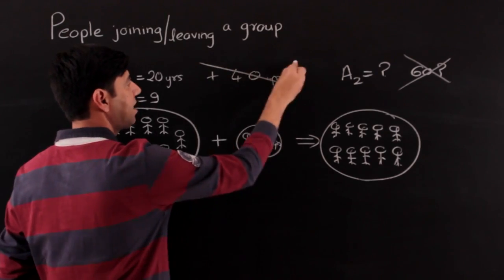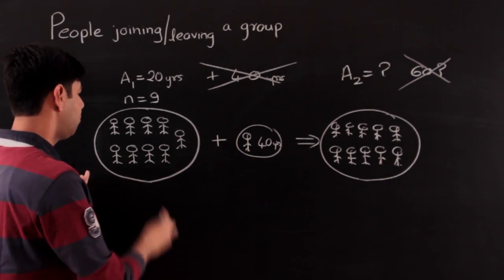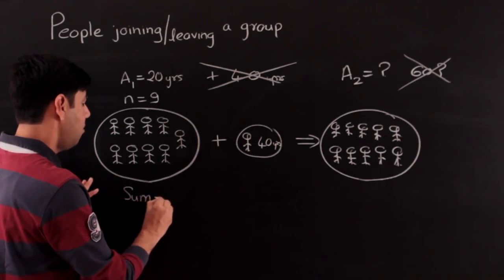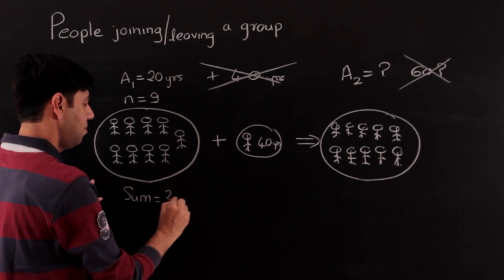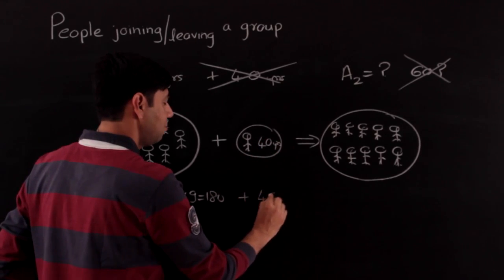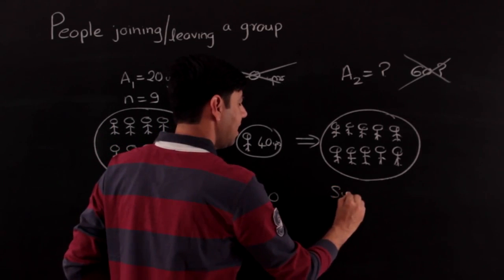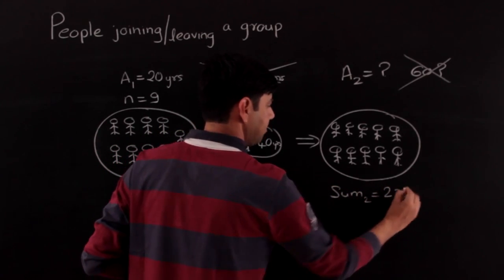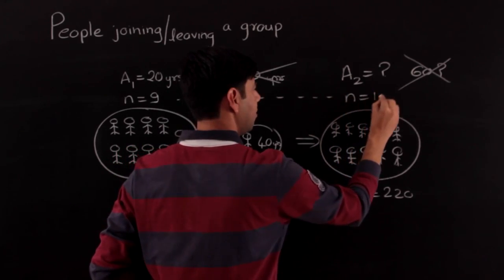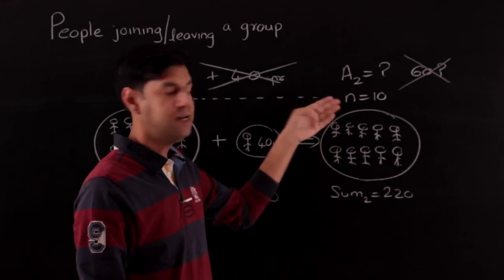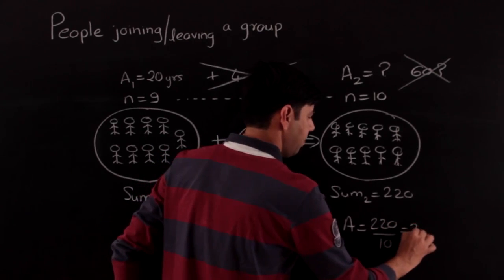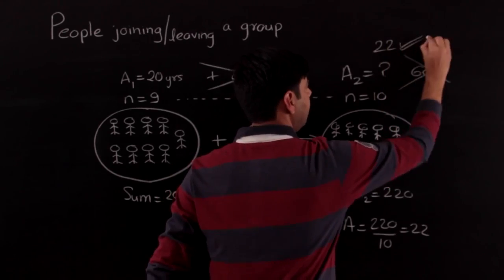The 40 needs to be added to the sum. The sum can be found as average times number of people: 20 × 9 = 180. Adding 40 gives a new sum of 220, and n increases to 10. So the new average is 220 ÷ 10 = 22. The average age of the new group is 22 years.